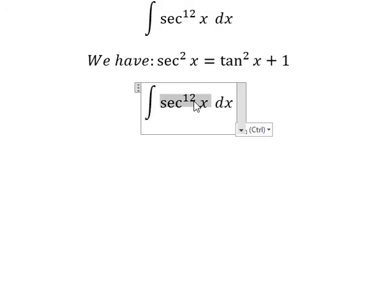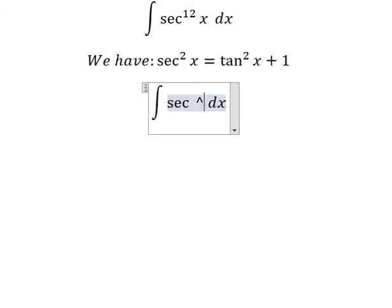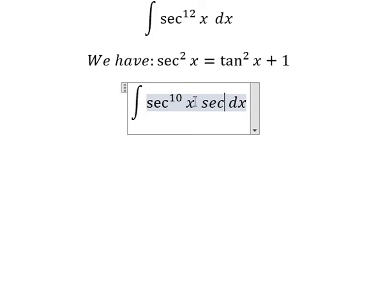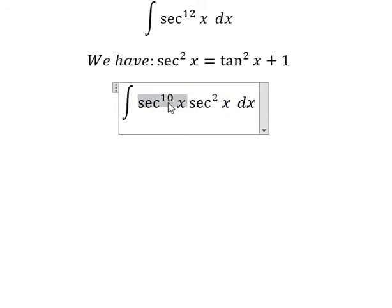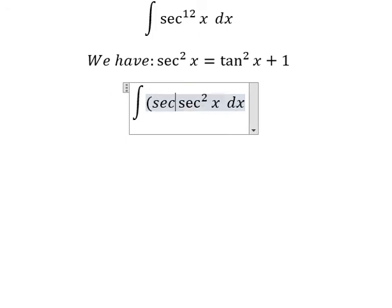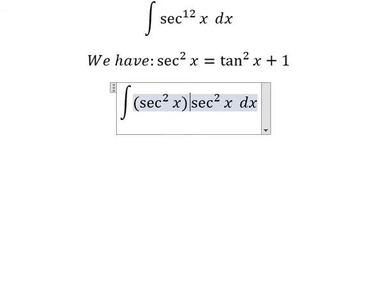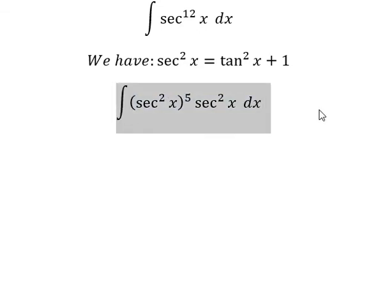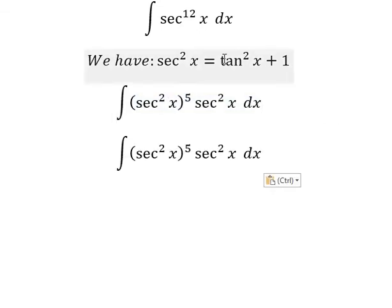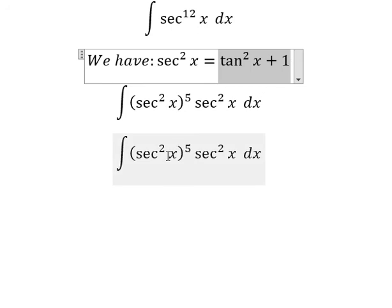So this one I can write as sec^10 x times sec²x. And this one we can change into (sec²x)^5 times sec²x. Now I can substitute the formula in here.